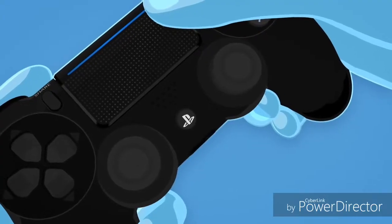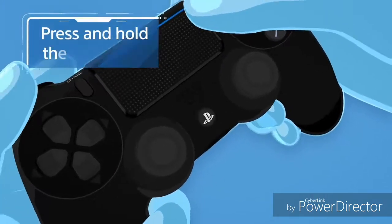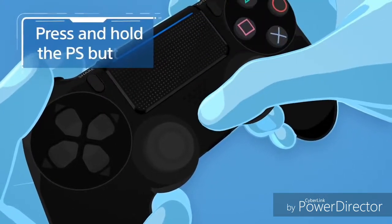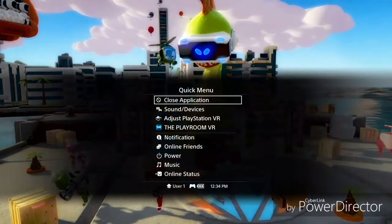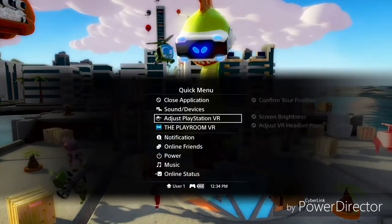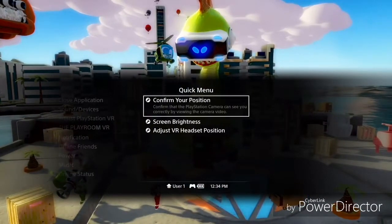To recalibrate or change your settings later on, press and hold the PS button on your controller to bring up the Quick menu and select Adjust PlayStation VR or go to the Settings menu for more setting options.